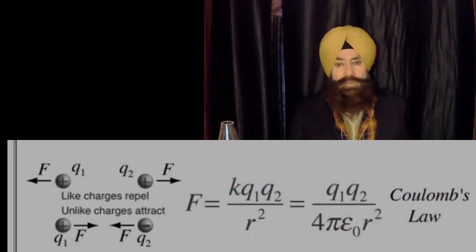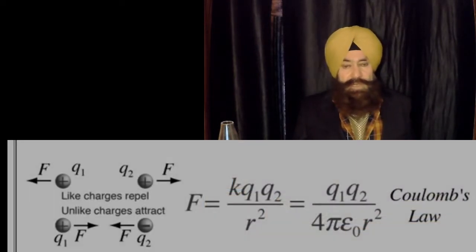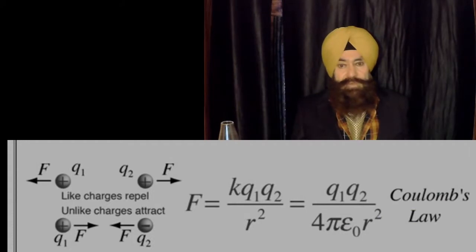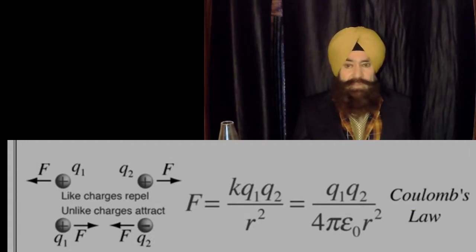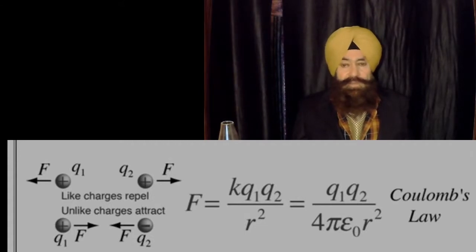You know very well the force of attraction or repulsion between two charges, may be negative-positive, negative-negative, or positive-positive. That force of attraction or repulsion given by the scientist Coulomb is known as the Coulomb formula.